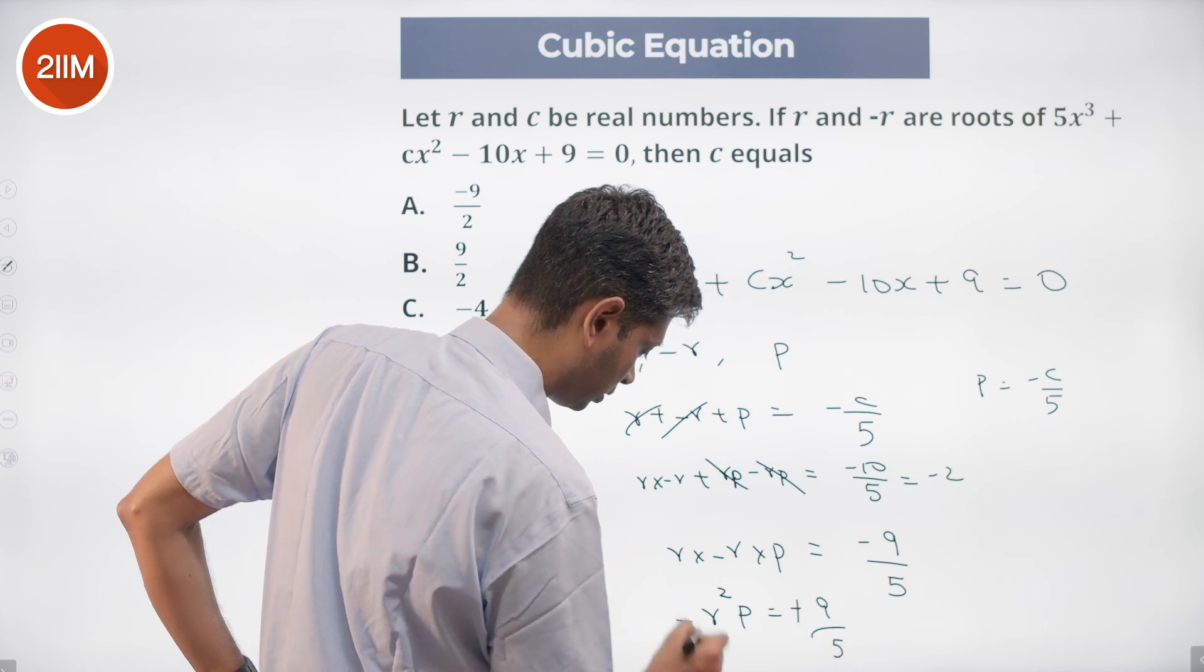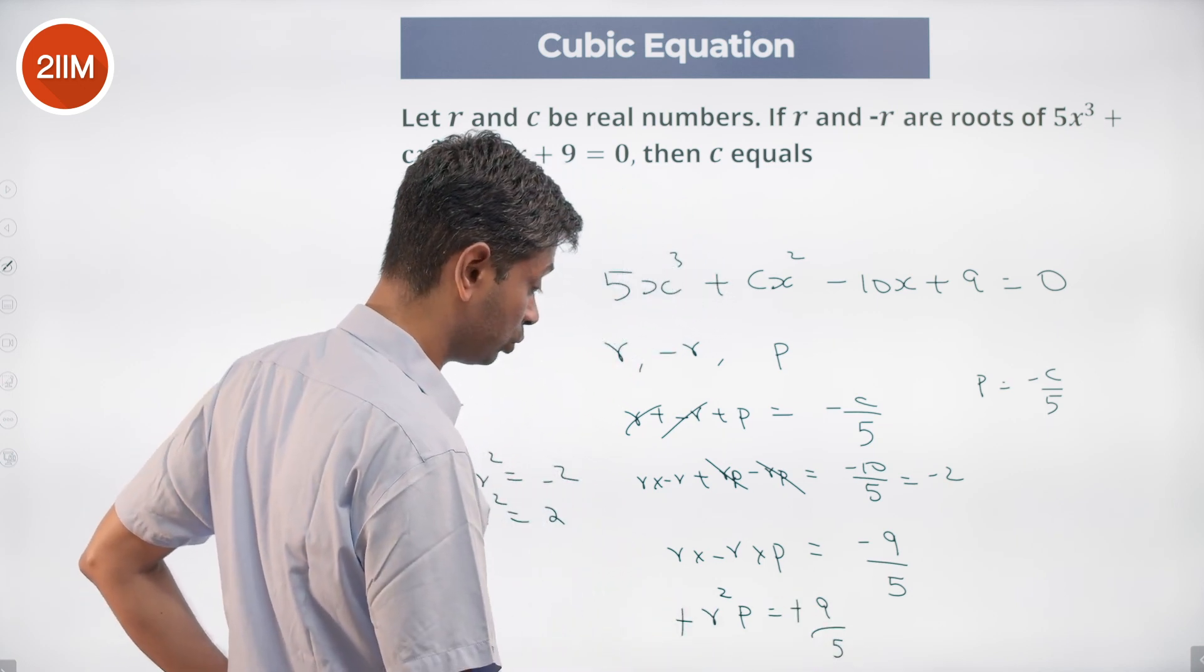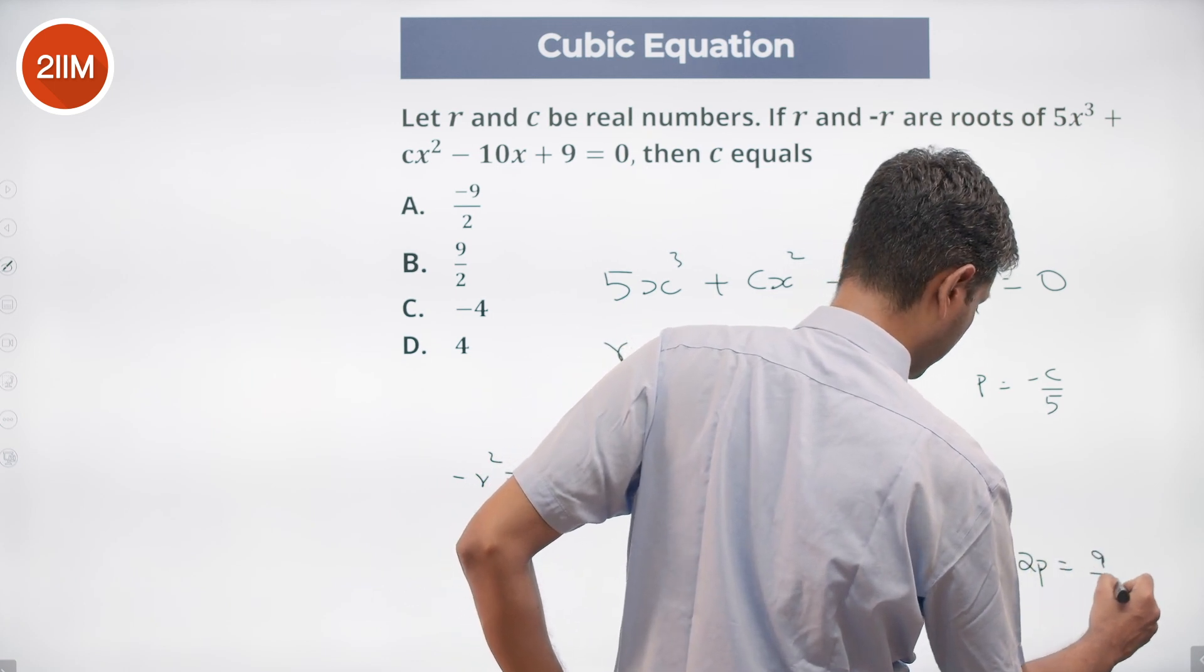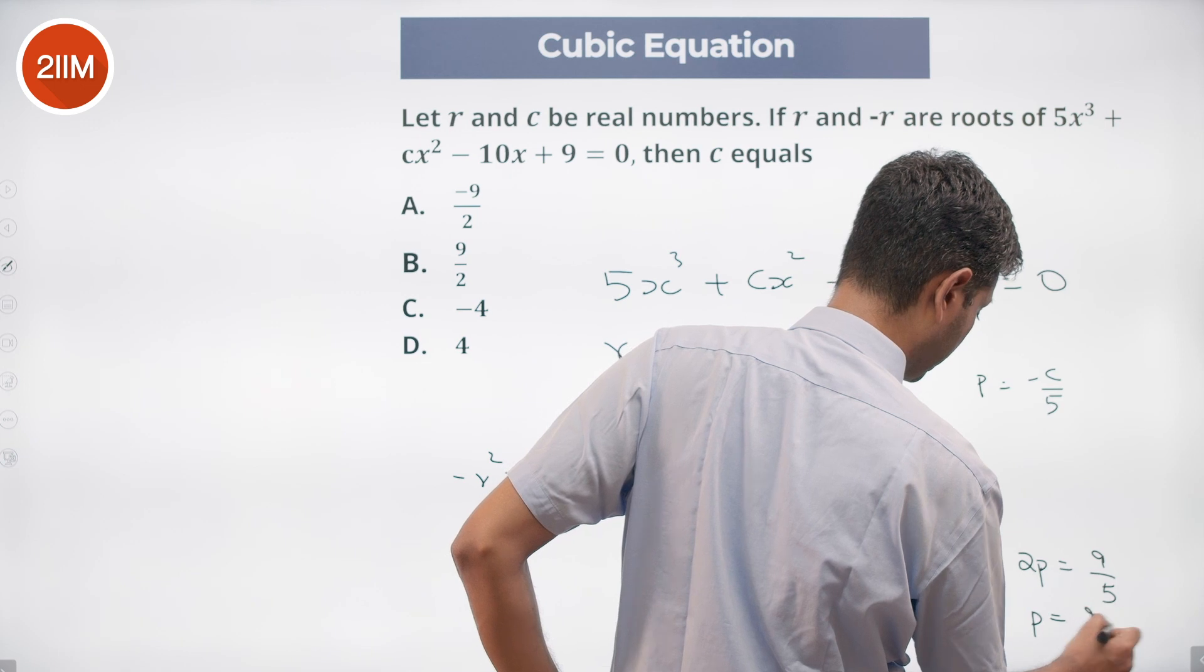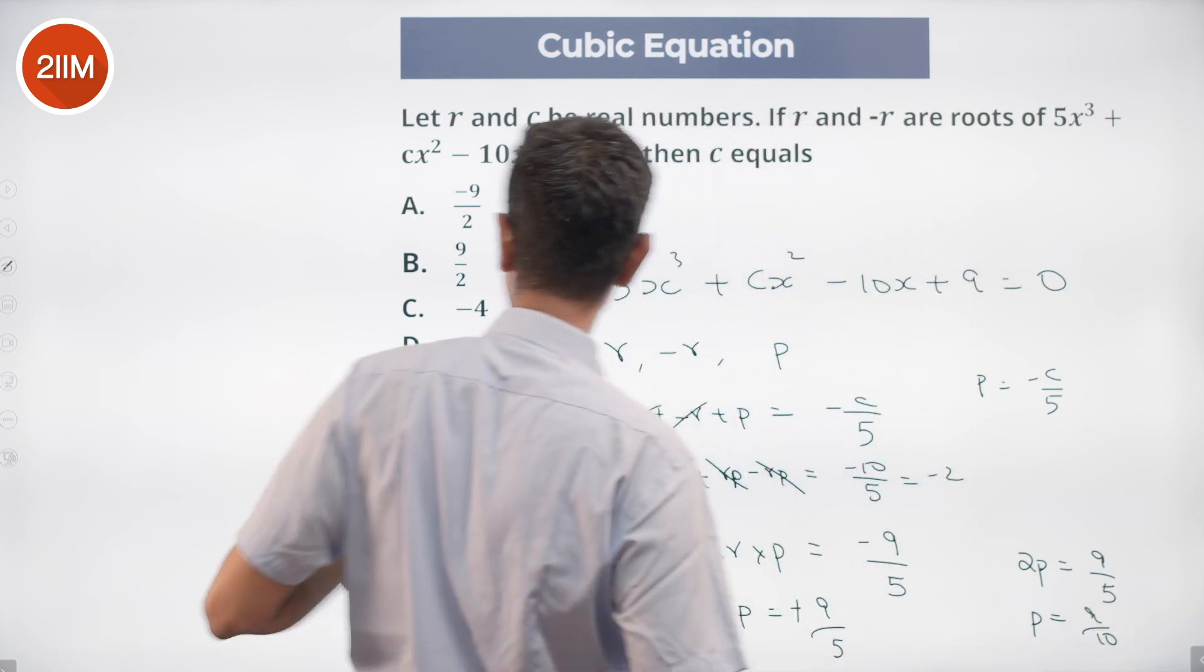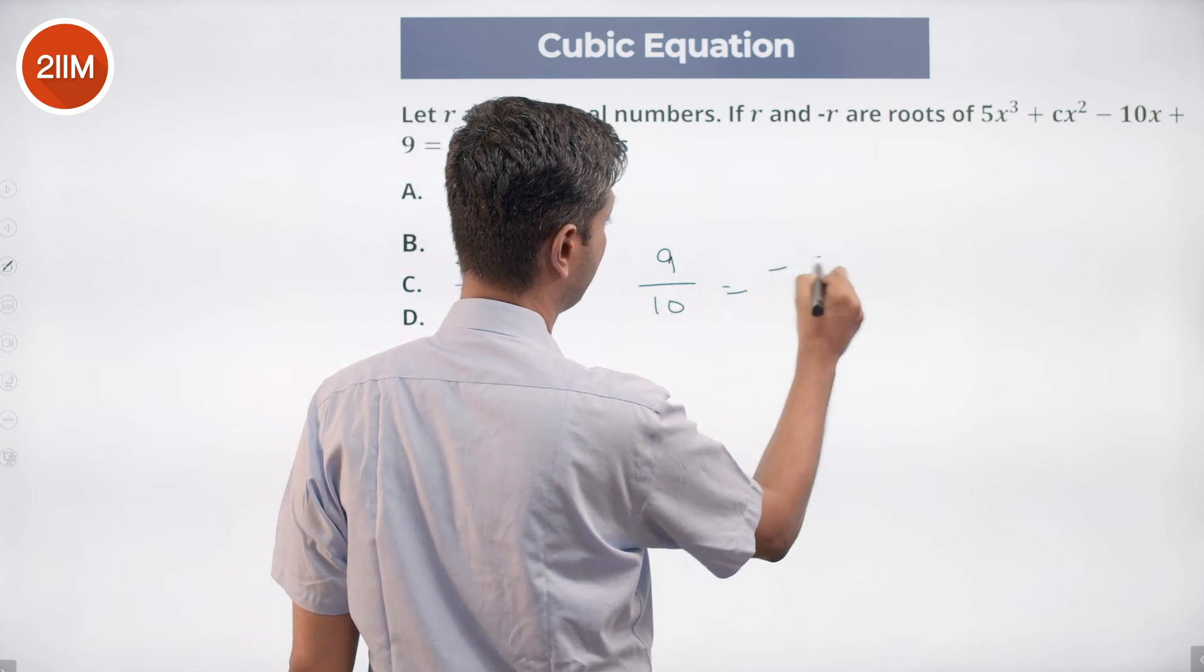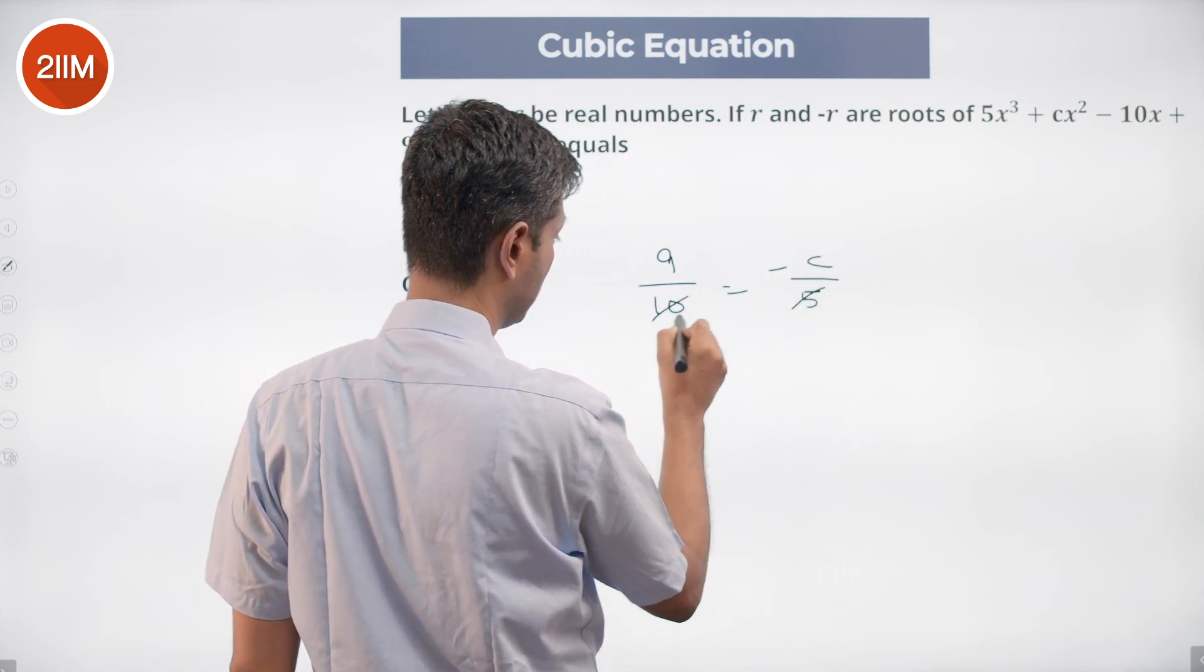Cancel the minus, r² = 2, 2p = 9/5, p = 9/10. We know p = -c/5, so 9/10 = -c/5, or c = -9/2.